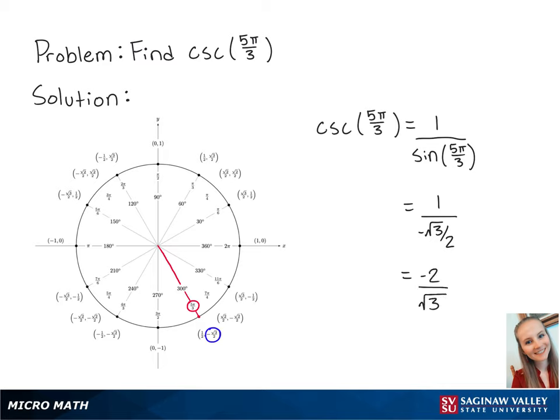We want to rationalize the denominator, so we're going to multiply the top and the bottom by √3 so that we get -2√3/3. And this is the final answer.